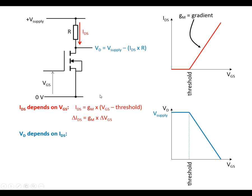Taking what we've got for the voltage at the drain, we can see that the voltage at the drain is the supply voltage minus the voltage lost across the resistor. If we express this in terms of change, the change in drain voltage is going to be the change in current multiplied by R. There's a minus sign because as the current goes up, the voltage at the drain goes down.